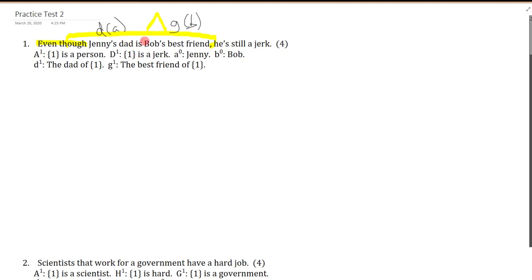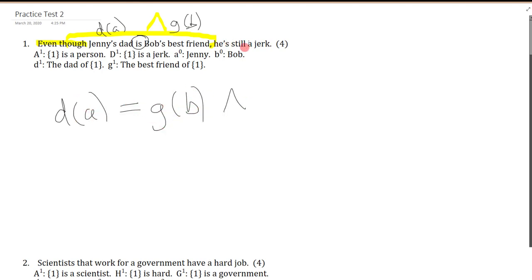The trick here is to realize that the word 'is,' when talking about two individuals, is just equality — so that's equals G of B. Then we say 'and he's still a jerk.' Who's he? It doesn't really matter — you can use either D of A or G of B, because they are the same person. So you'd say: is a jerk, D of A.